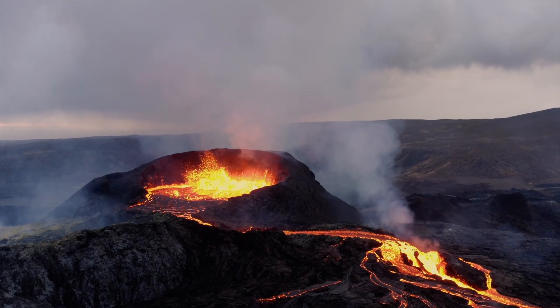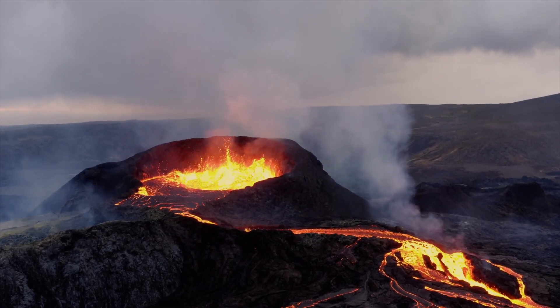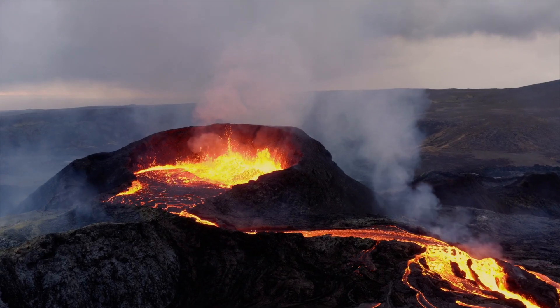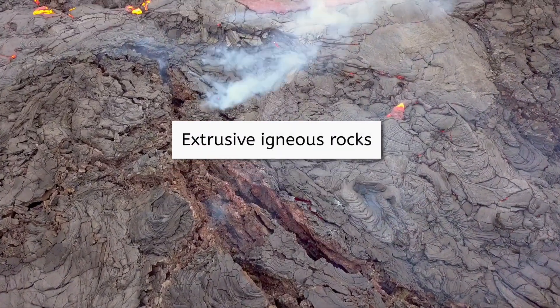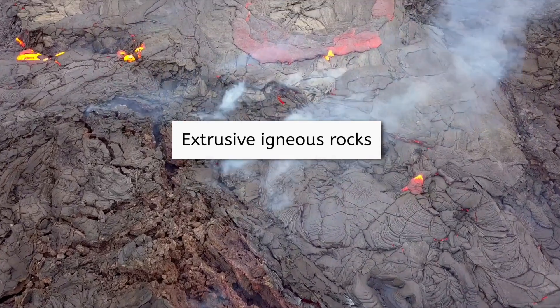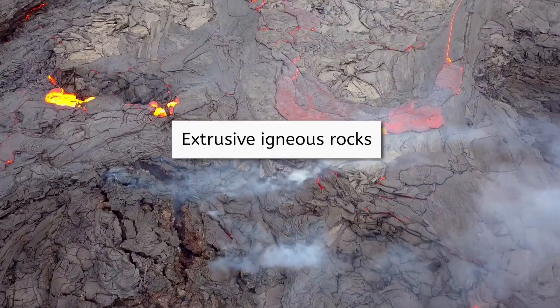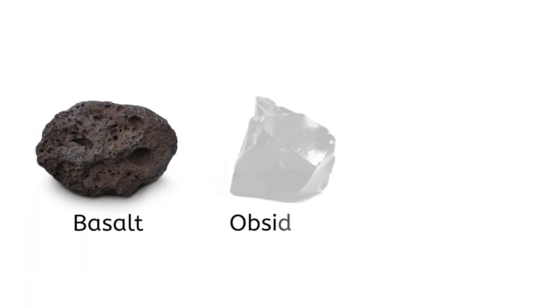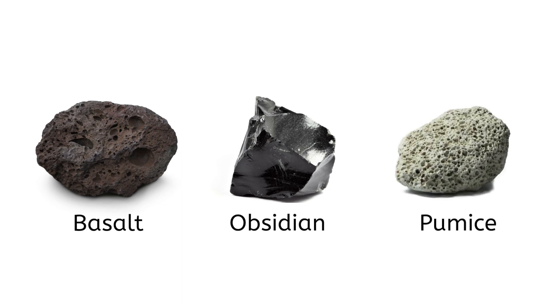Igneous rocks can also form above Earth's surface when magma erupts as lava, cooling quickly and forming extrusive igneous rocks. Because these rocks cool quickly, they have small crystals. Basalt, obsidian, and pumice are all common examples of extrusive igneous rocks found near volcanoes across the globe. Isn't geology fascinating? Next up, Helen will tell you all about sedimentary rocks.